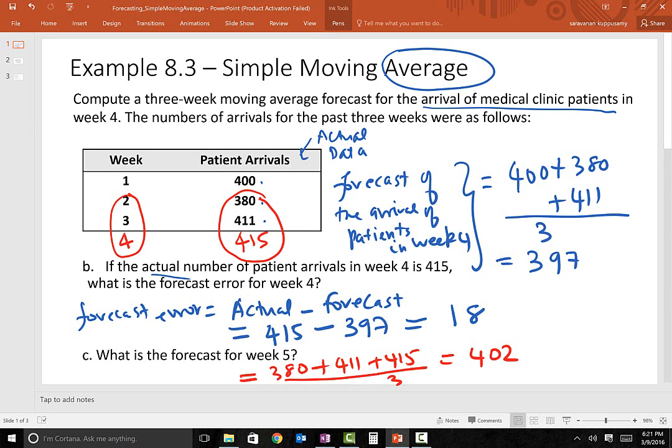The reason why this is called a moving average is because when we move into the future and make more forecasted values, the data we use to forecast will also change accordingly. To forecast week four, we use only the first three weeks. To forecast week five, we use weeks two, three, and four. If we wanted to forecast week six, we would use weeks three, four, and five. So the window of data changes as we move forward.